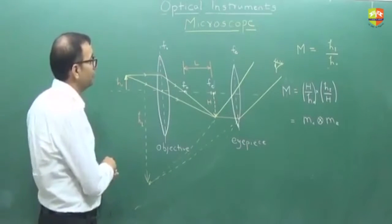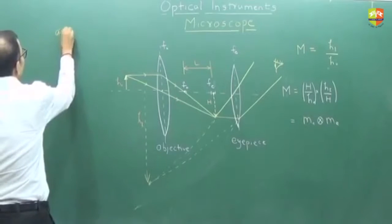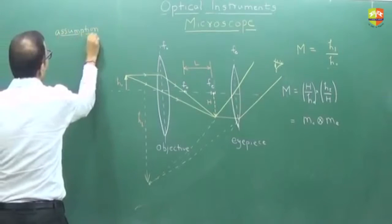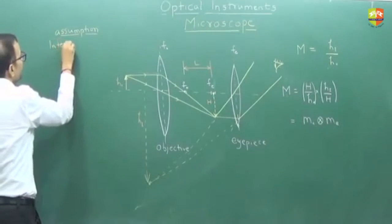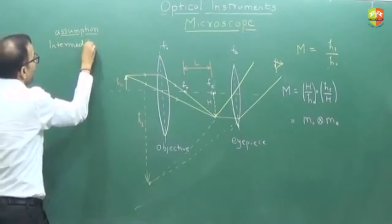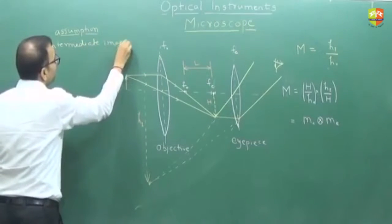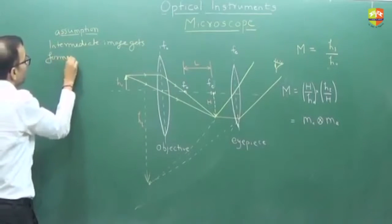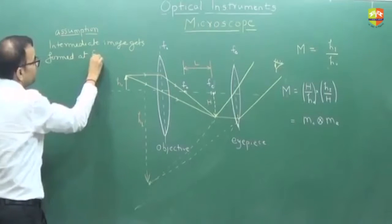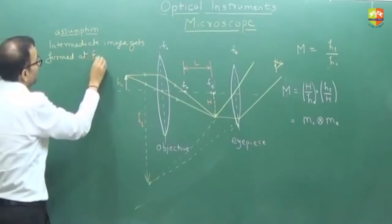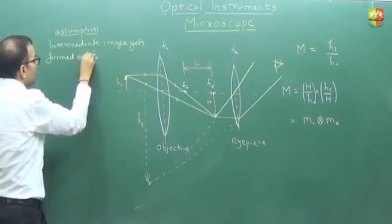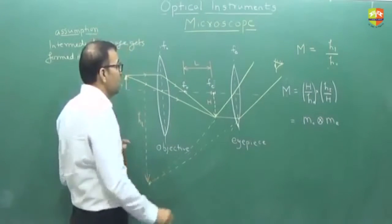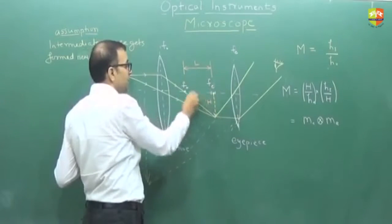Here we have an assumption: the intermediate image gets formed near FE. If that is the assumption, I can say L is the distance between the image and FO.